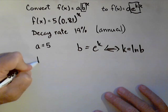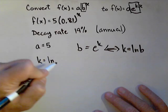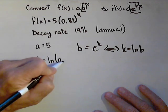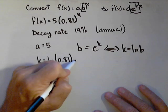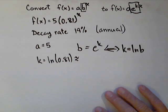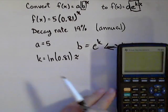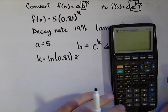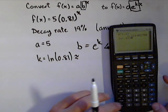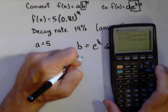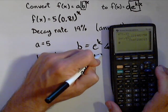K was the other part that we needed. We know that B is 0.81, so K is equal to the natural log of 0.81. Using our calculator, we can compute the natural log of 0.81 and get roughly negative 0.2107. Notice it's negative — we'll talk about that in a second.